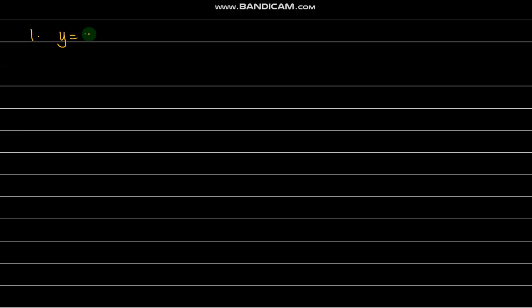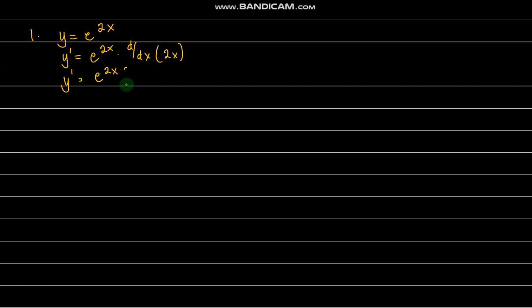In this video we're going to talk about how to differentiate exponential and logarithmic functions. For the first example, let's say we have y equals e raised to 2x. We know that the derivative of e to the x is e to the x, but here we have to use the chain rule because the exponent is a differentiable function of x. So y prime equals e raised to 2x times the derivative of 2x, which gives us 2 times e raised to 2x.